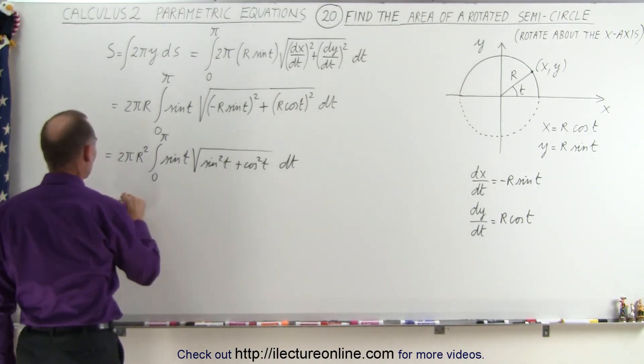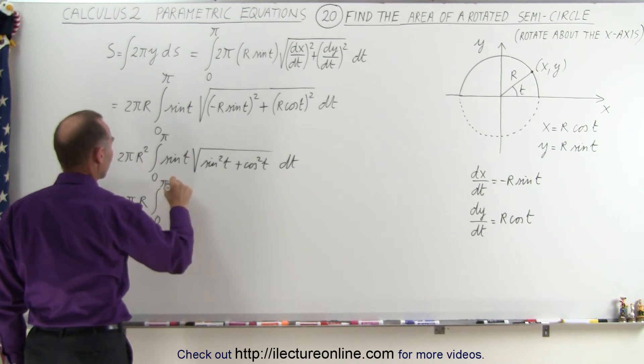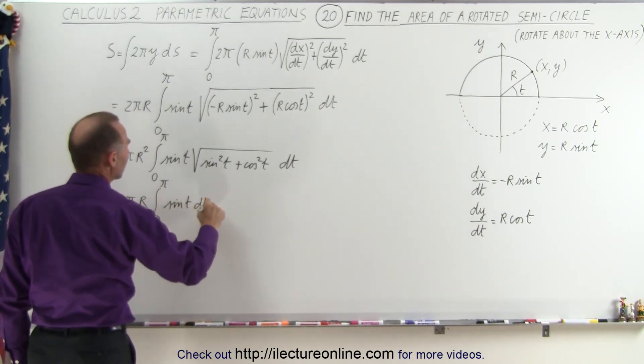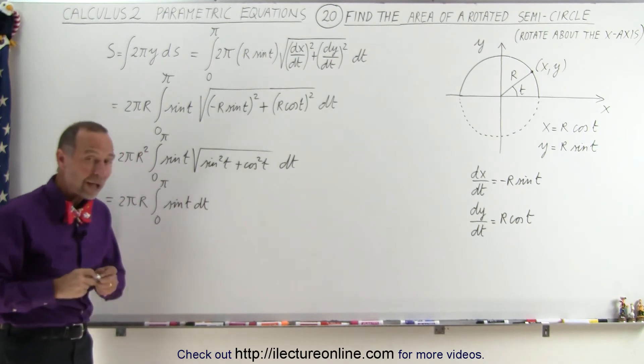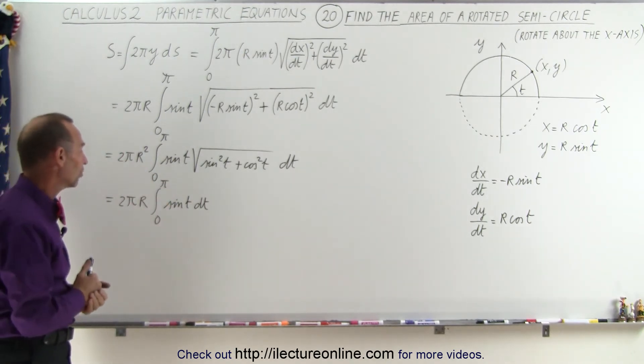So it becomes equal to 2πr² times the integral from 0 to π of the sine of t dt. So if you ever wondered why we need parametric equations, in this case parametric equations makes everything a whole lot easier.